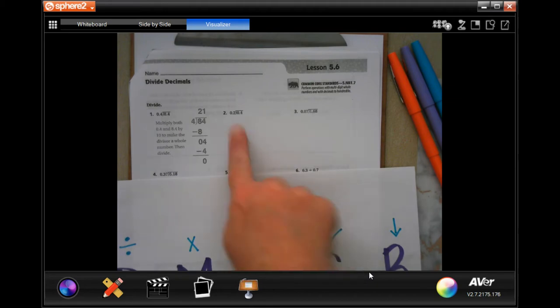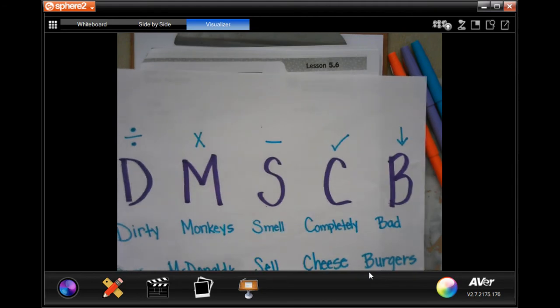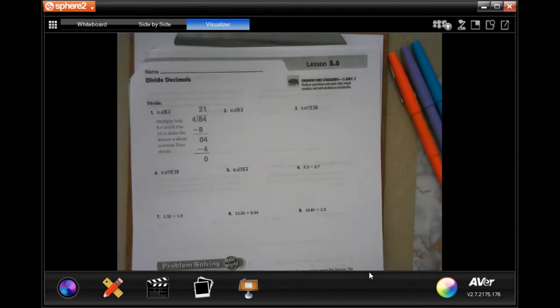So I'm actually not going to do number two with you. I'm going to start on number three, but before I do that, I'm going to write down at least the initials at the top of the paper so that you remember the steps as we're going. So dirty monkey smoke completely bed or does McDonald's cheeseburgers. It just means divide, multiply, subtract, check, and bring down. So we're going to get started.